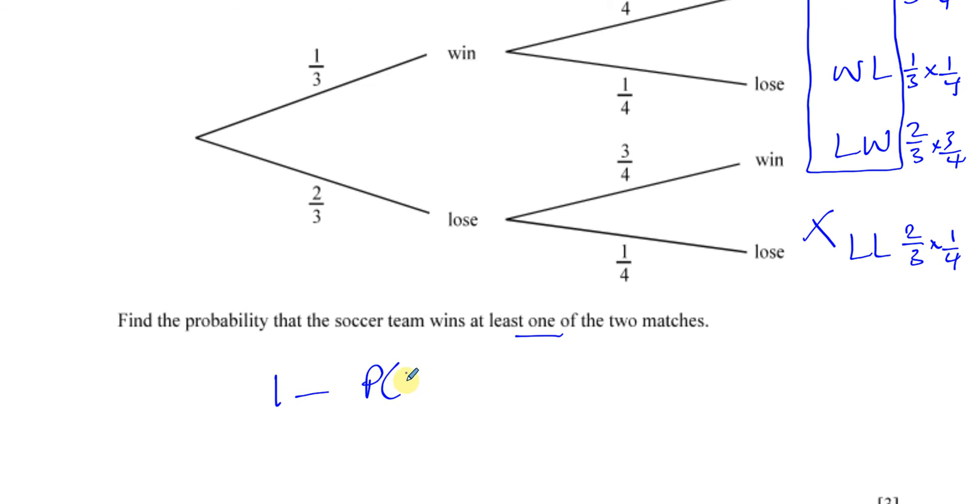So if I just do one minus the probability of loss and a loss, that's one minus two thirds times one quarter, which is equal to one minus, that gives me one over six. So I'm left with five over six. That's the probability of winning at least one of the two matches.